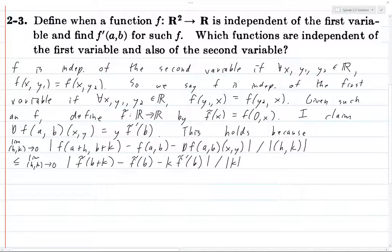So this is divided by the absolute value of k, and then this limit is precisely 0, because that's what it means to be the derivative of f tilde. It means the fact that f tilde prime of B is the derivative of f tilde at B means precisely that this limit is 0. In fact, this limit would hold even without the absolute value signs, but it holds with the absolute value signs.